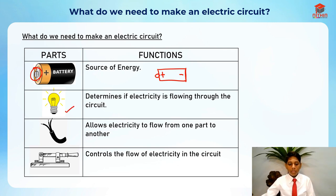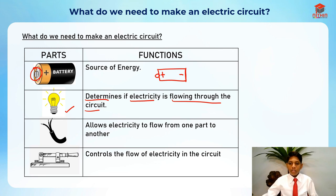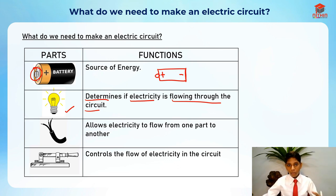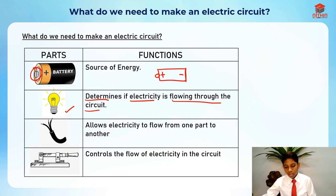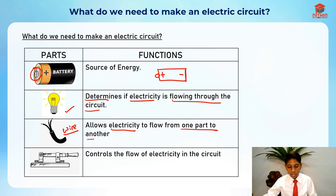The light bulb determines if electricity is flowing through the circuit or not. If the light bulb doesn't light up, it means that electricity is not flowing through the circuit. If it lights up, it means that electricity is flowing through the circuit.